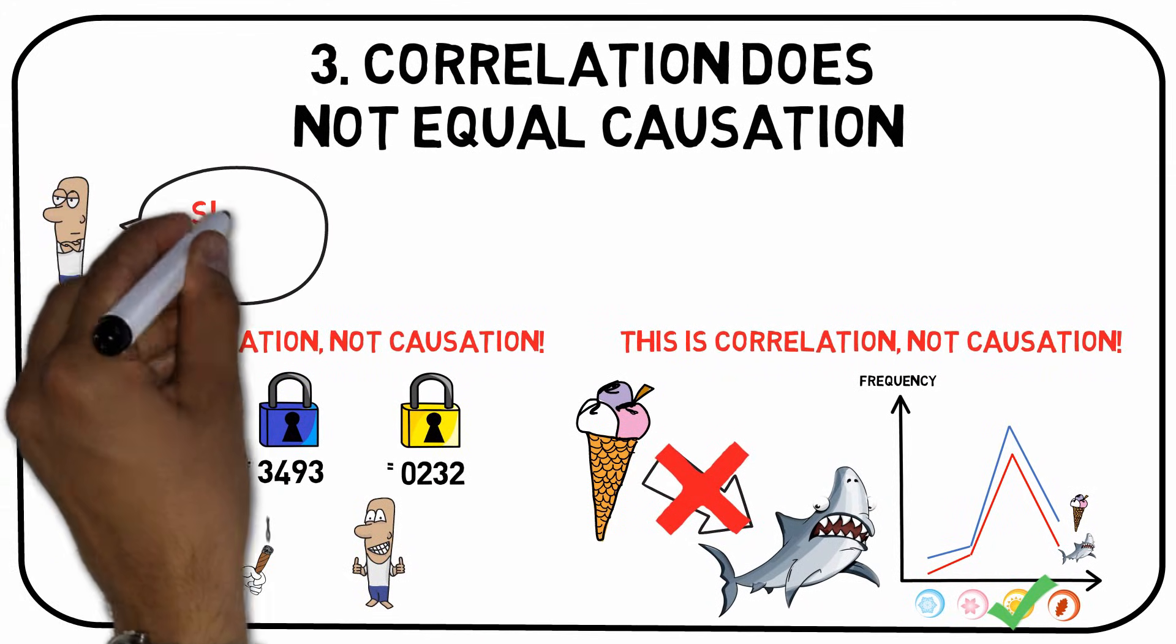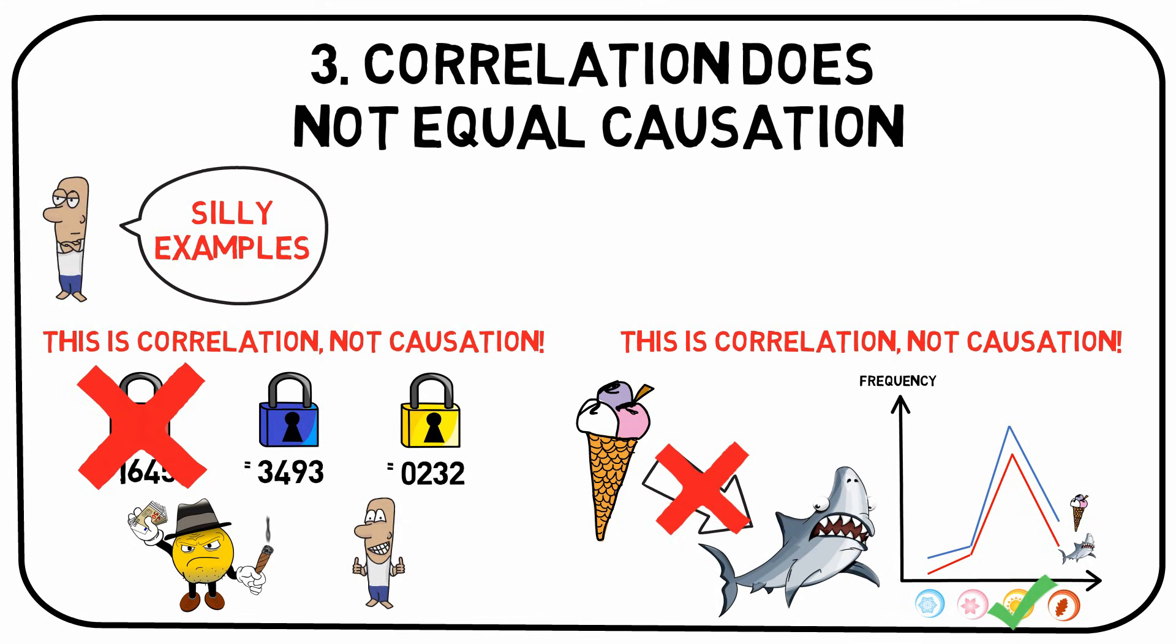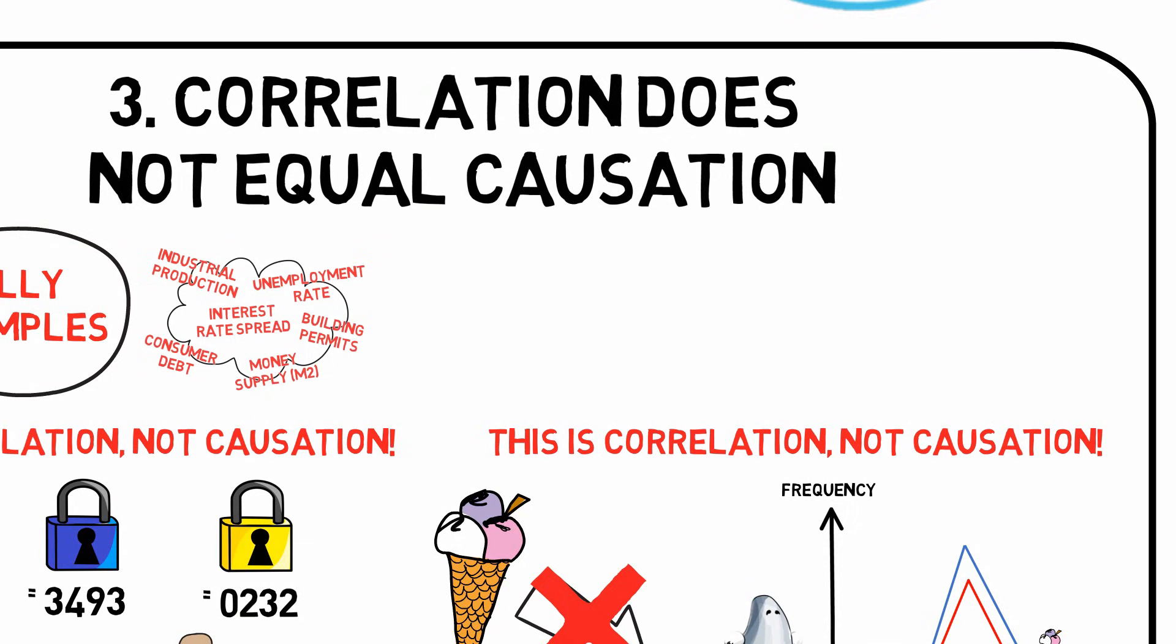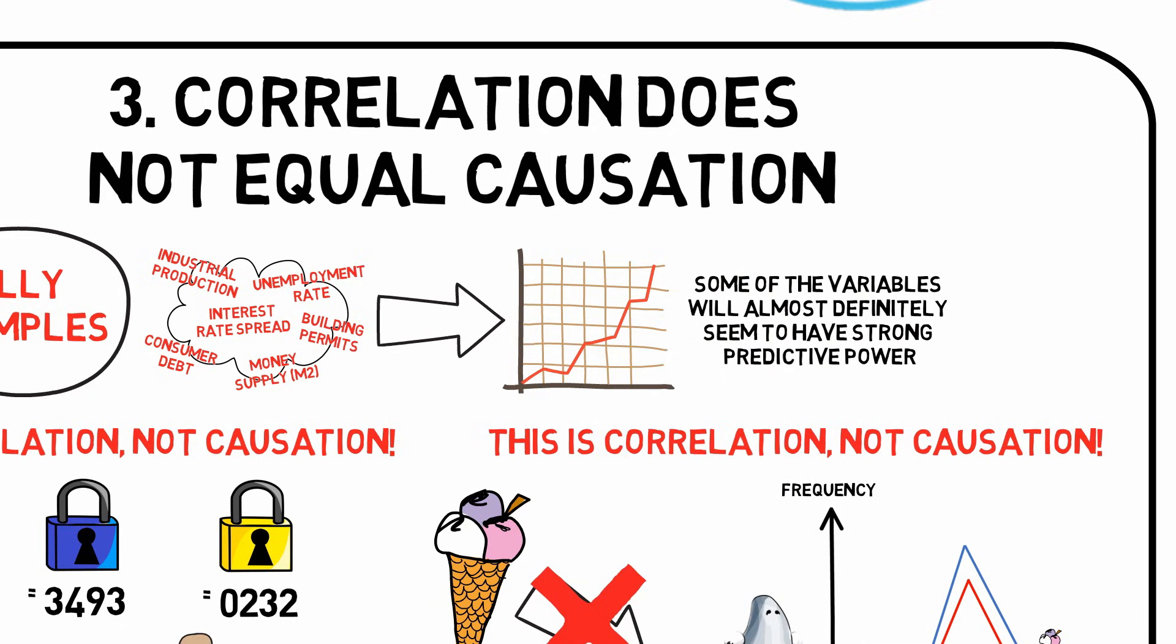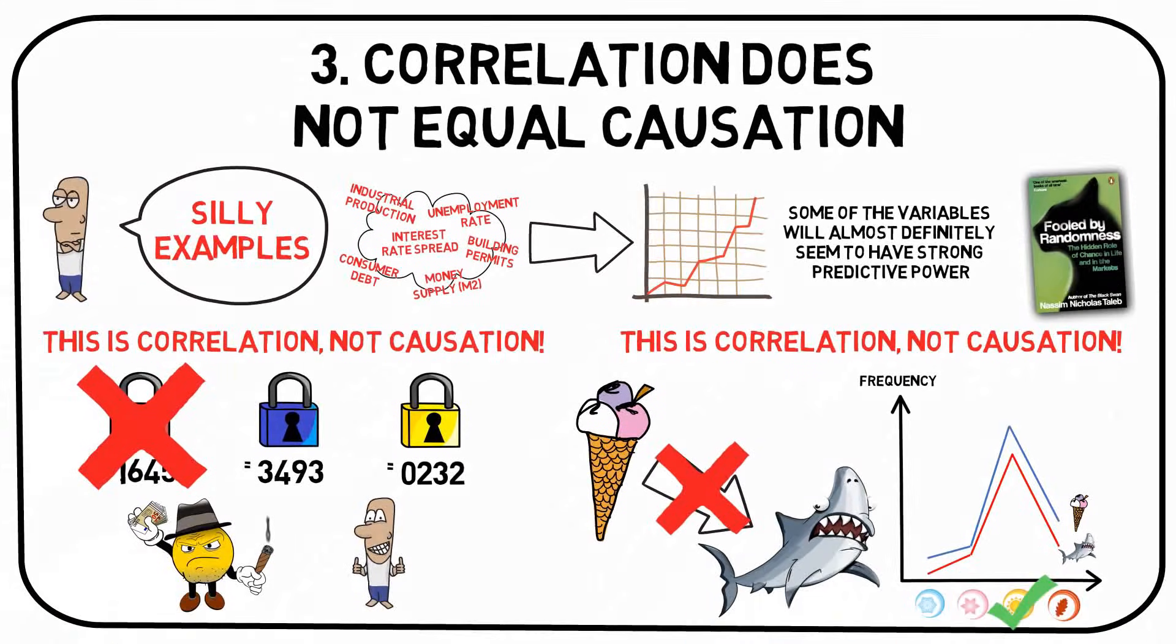While these examples may seem a bit silly, mistaking causation for correlation is a very common forecasting problem. As stated earlier, there are 45,000 economic indicators produced by the US government each year. If you are trying to predict the stock market, for example, and you look at historical data to do this, you are almost guaranteed to find that some of these variables seem to have strong predictive power. Yet, they may not. You may just have been fooled by randomness. Whenever you make a prediction, be sure that there's a logical explanation for the mathematical relationship. Do not trust data unconditionally.